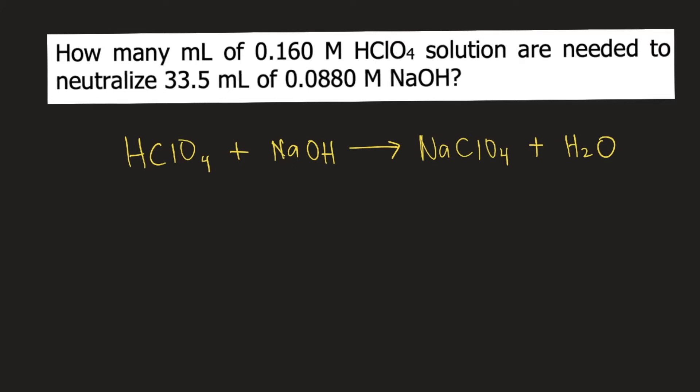In the problem, we are given 33.5 ml of NaOH solution. The first thing we need to do is convert ml to liters. We are familiar with the conversion that one liter is equivalent to 1,000 ml. This is your NaOH solution. So ml would cancel. Now we have liters of NaOH solution.